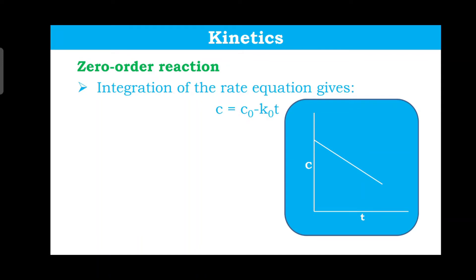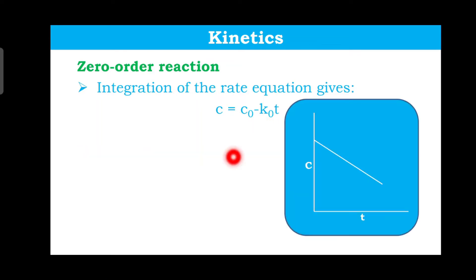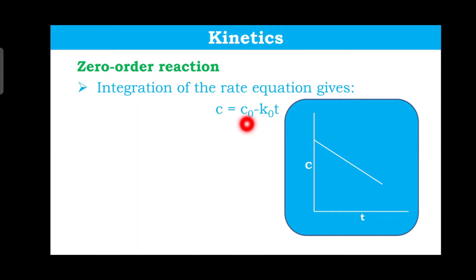If we plot this equation on a graph, we take concentration on the y-axis and time on the x-axis. Plotting gives a straight line, and the slope of this line is minus k, which is the rate constant. This line intercepts the y-axis at the initial concentration, C₀. So if you plot C versus t and get a straight line, that data represents a zero order process.